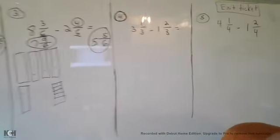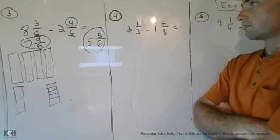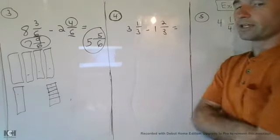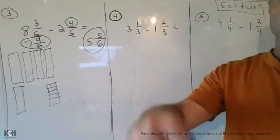All right, number four. 3 and 1/3 minus 1 and 2/3. Can't take two away from one. Got to break up that 3 and 1/3. Hit the pause button to solve now, please.